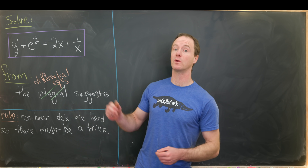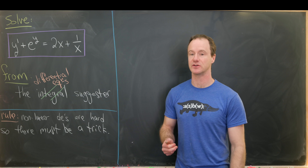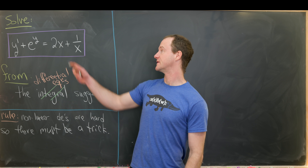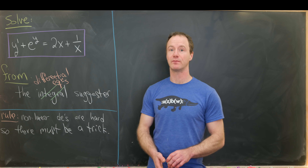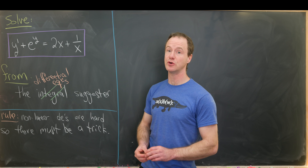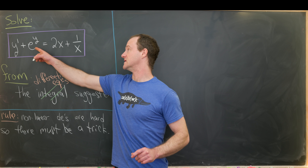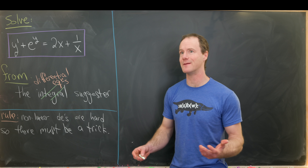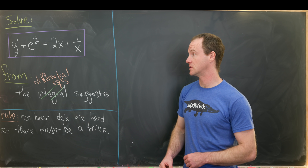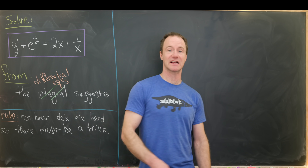Here we'll be able to transform our differential equation into a linear differential equation. The equation we have is y prime plus e to the y equals 2x plus 1 over x. The fact that y appears in the exponential function makes this non-linear, so let's start with a substitution based on that exponential function.